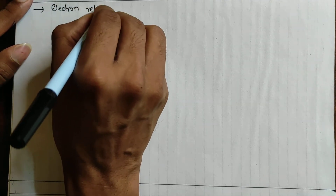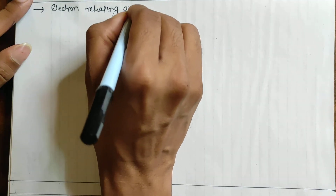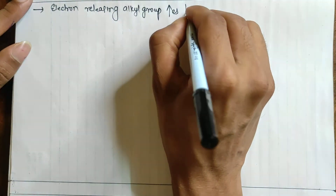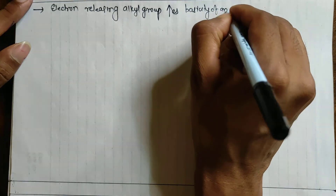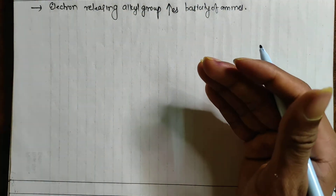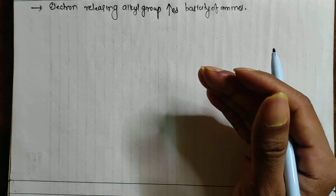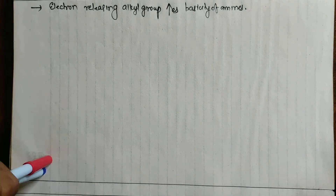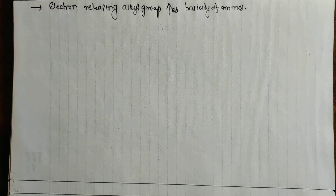Electron-releasing alkyl groups increase the basicity of amines. Higher the number of electron-releasing alkyl groups, higher will be the basicity of amines.